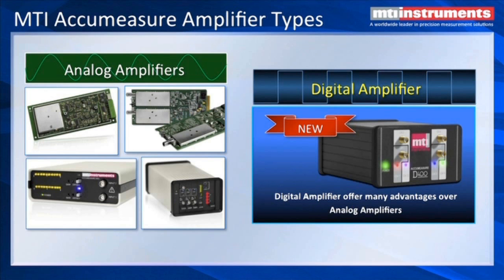MTI offers two basic styles of amplifiers. We have analog amplifiers, which can be used in legacy systems. They have an analog output for each channel. We also have a new digital AccuMeasure amplifier with a pure digital output, no analog output.